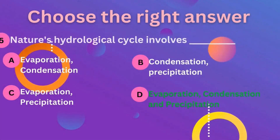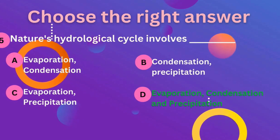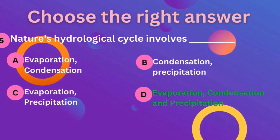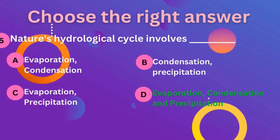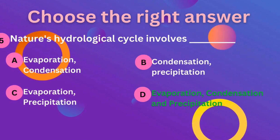Question number 5: nature's hydrological cycle involves evaporation, condensation and precipitation.